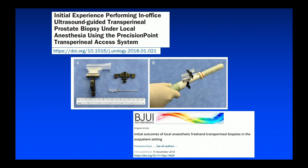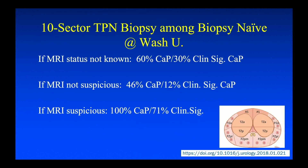That's not yet available. For now, when I do a transperineal biopsy, I'm using Matt Alloway's precision point system. This introducing needle is placed on the left side of the perineum, and from that one axis you can take biopsies of the entire left side of the prostate. Then you reintroduce the needle into the right side of the perineum and take biopsies on the right side. We've been doing it now for about a year, year and a half. If the MRI status of the patient is not known, 60% of the time we find cancer, a third of the time it's significant. If the MRI is not suspicious, 46% cancer, 12% clinically suspicious. And if the MRI is suspicious, we find cancer 100% of the time, and it's clinically significant the majority of the time.